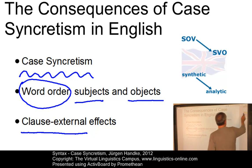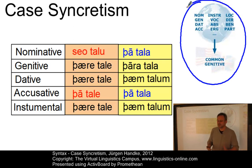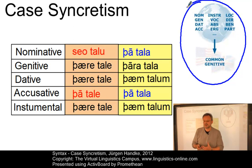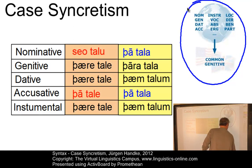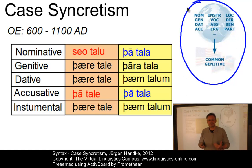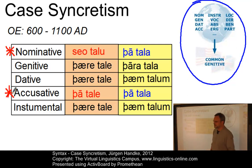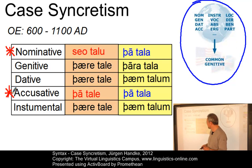Let us start with case syncretism in general. Case syncretism, or the merger of cases, occurs if formally and morphologically distinct cases or case forms merge. Here is an example from Old English, the type of English used between 600 and 1100 AD, where most nouns exhibited several distinct case forms. We concentrate on the nominative and accusative case, because these are the two case forms responsible for the differentiation between subjects and objects.